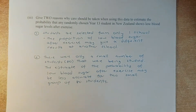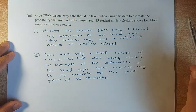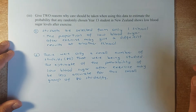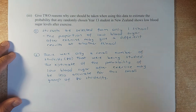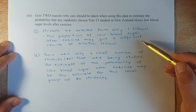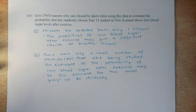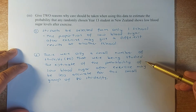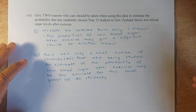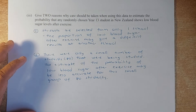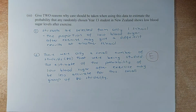The third question gives two reasons why care should be taken when using the data to estimate the probability that any randomly chosen year 13 student in New Zealand shows low blood sugar after exercise. First, students were only selected from one school, so results may differ at another school. Second, there are only 80 students studied, which is not a good representation of the whole country. Those two reasons will give you an excellence.